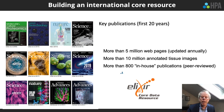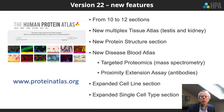We have more than 10 million annotated tissue images and more than 800 in-house generated publications. Version 22 has a lot of new features — we're going from 10 to 12 different sections. We will now go through some of the major new features of version 22.